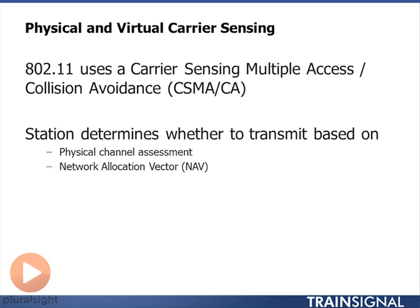The problem in a wireless network is that I can't detect a collision. Think of it this way: imagine you were on one side of a football field shouting, and I was on the other end whispering — you wouldn't be able to hear me. I cannot detect incoming signals while I'm transmitting. So if you have two stations transmitting at the same time, those stations will not be able to hear any other transmissions. You cannot do collision detection like you can in a wired Ethernet network. Instead, you have to use collision avoidance techniques.